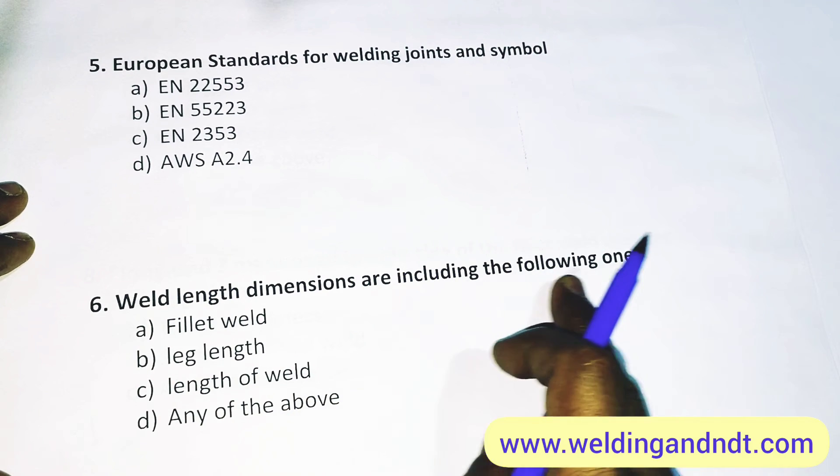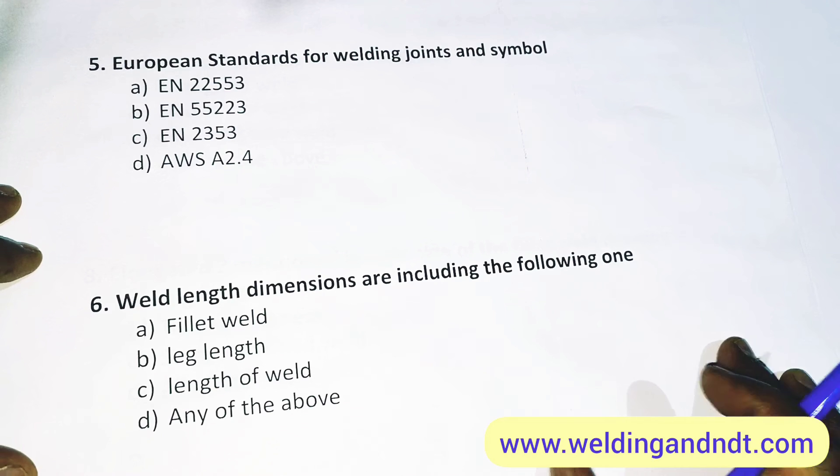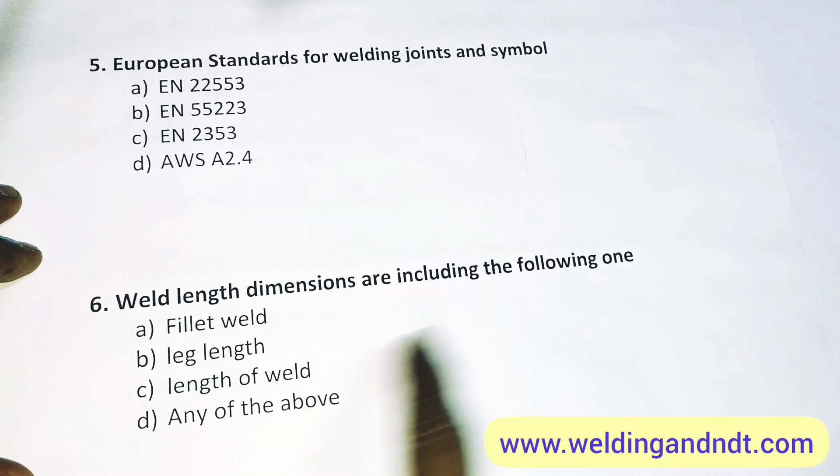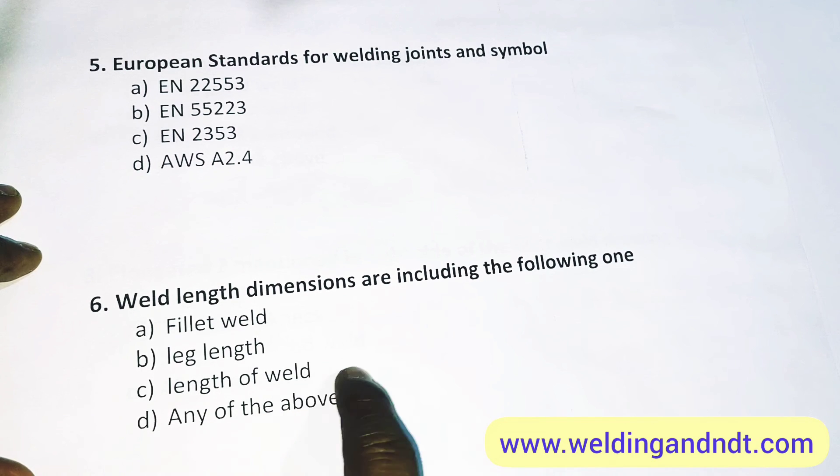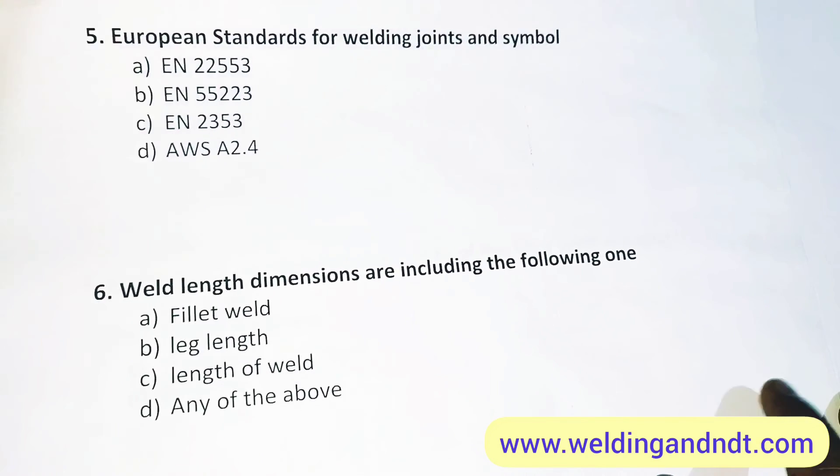Now, weld length dimensions are including the following one: that is the length of the weld and it is specified by small l. So C will be the answer.